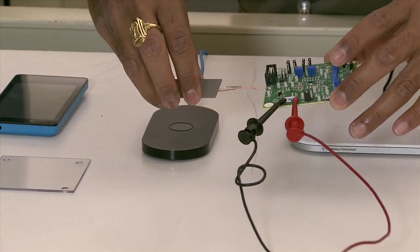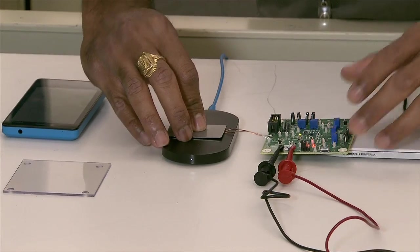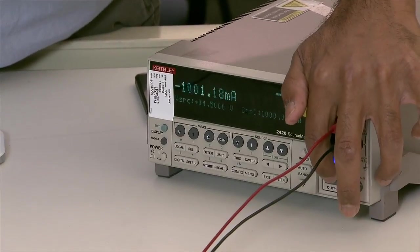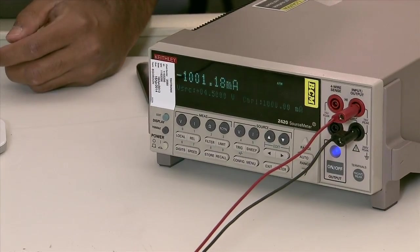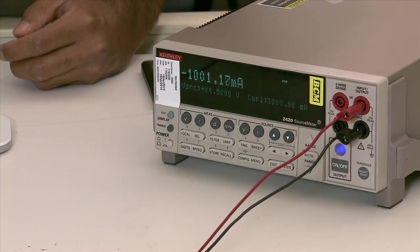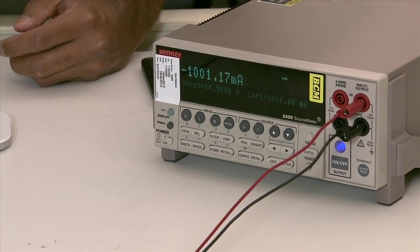First, on the WPC transmitter. As you can see, it comes up and regulates to 5 watts, which is 5 volts and 1 amp in this particular case.